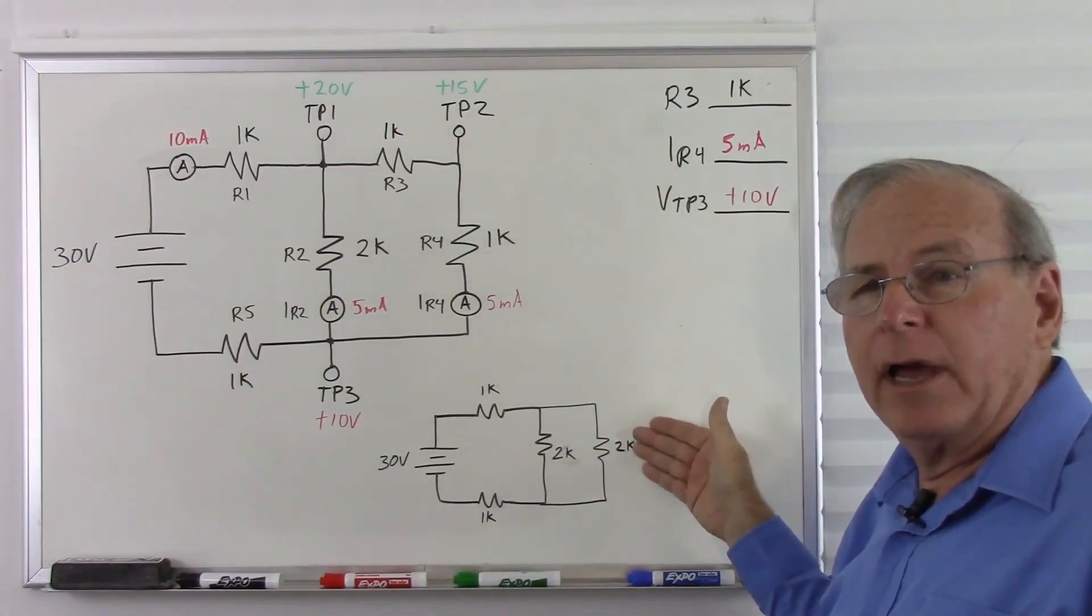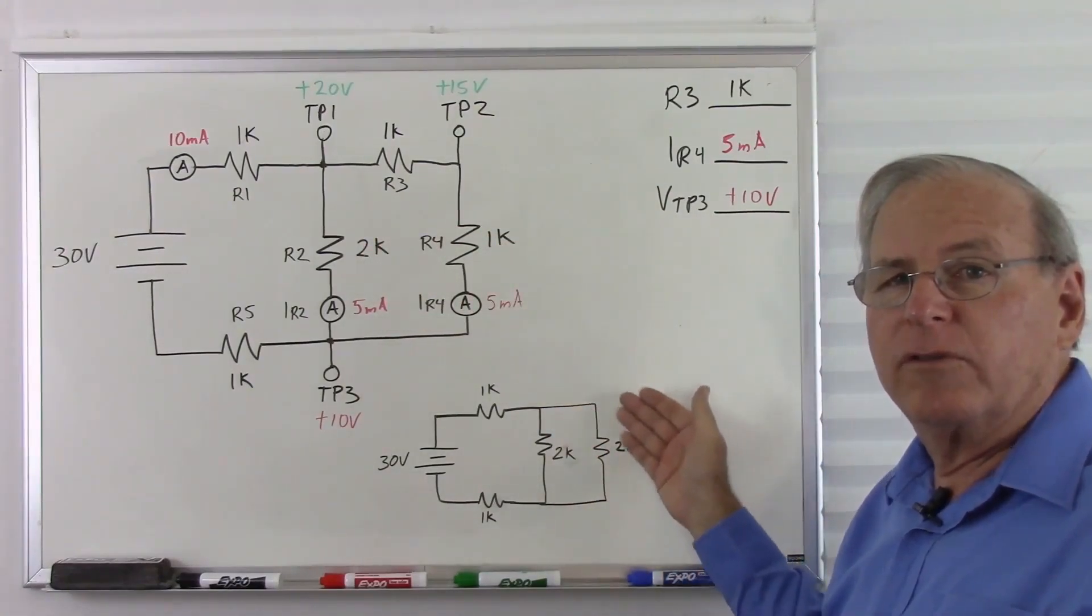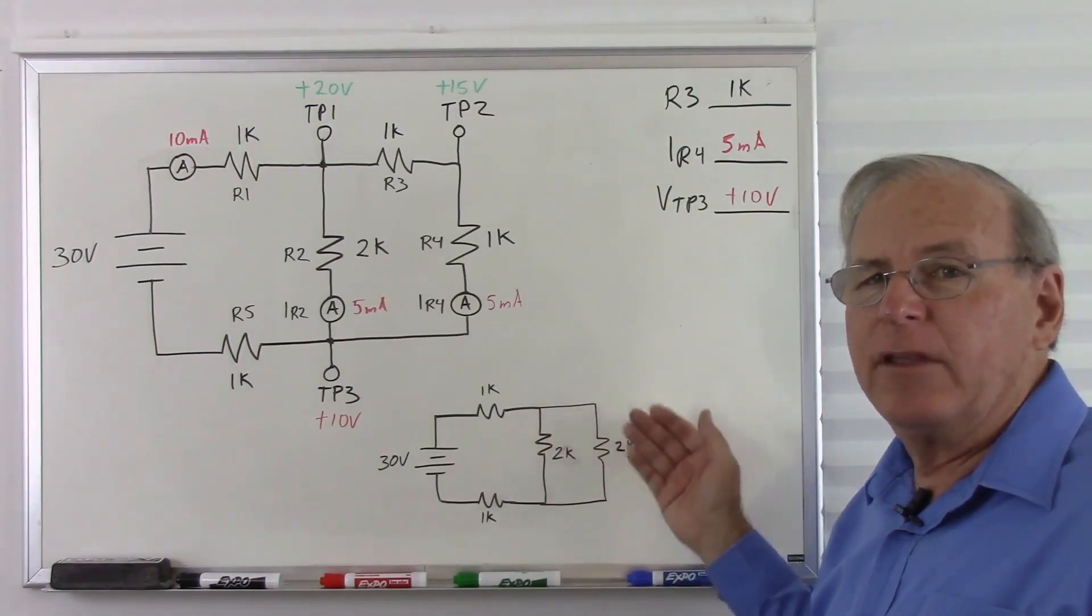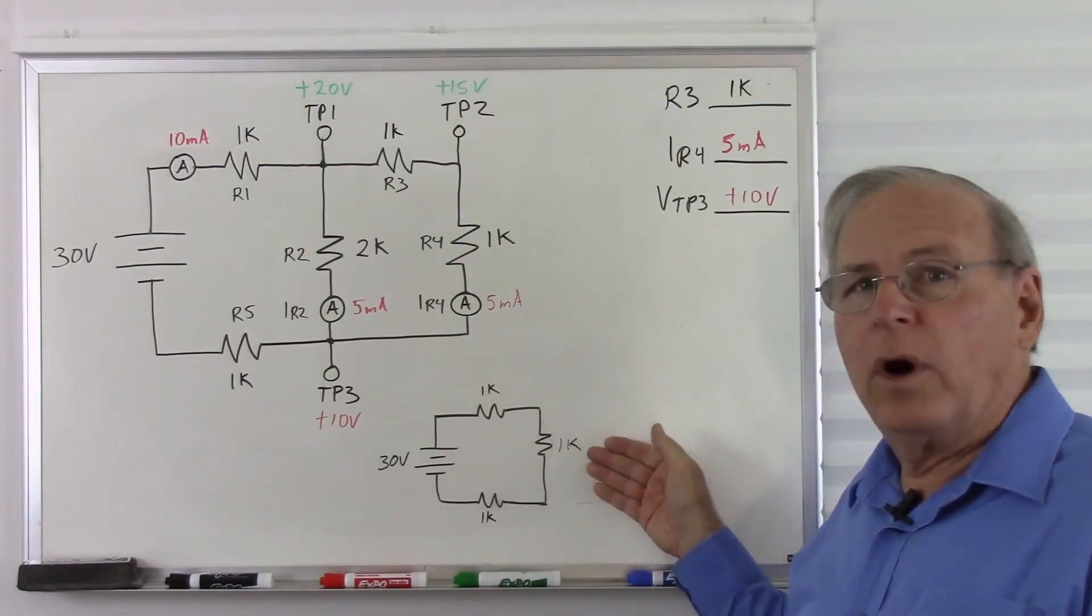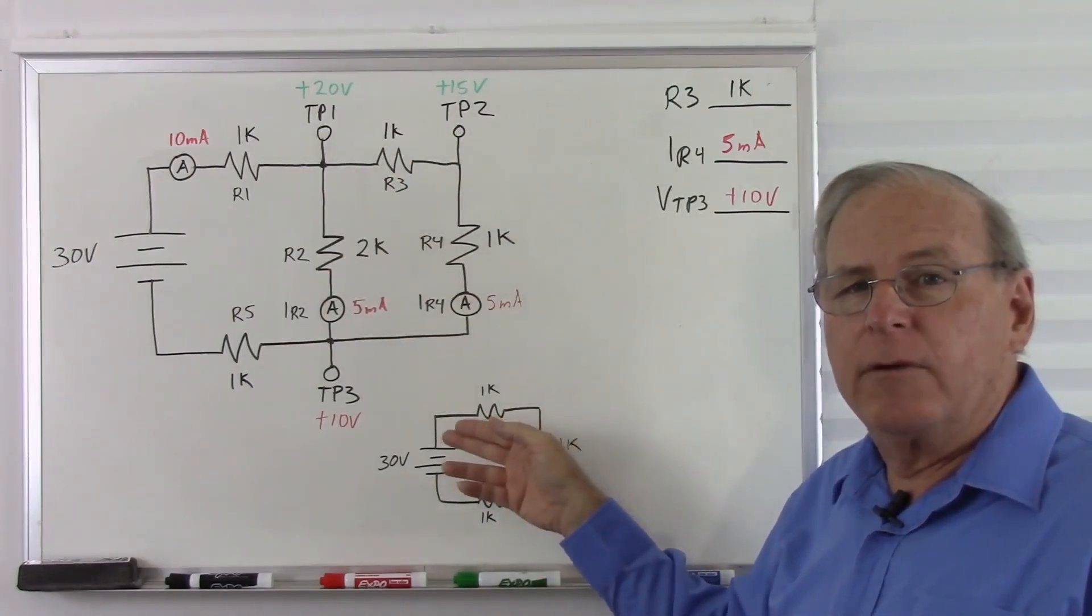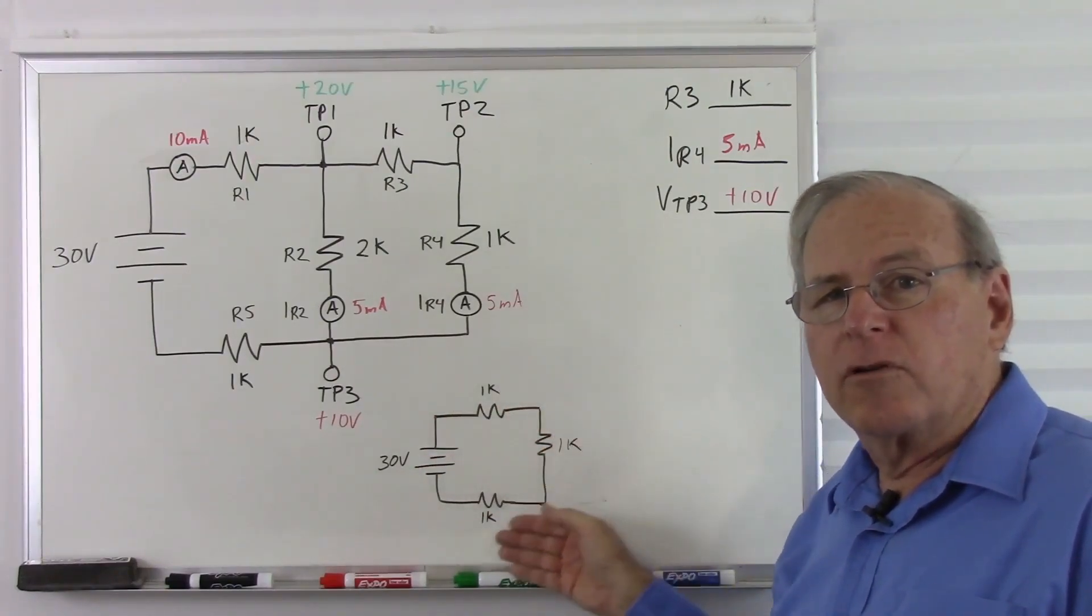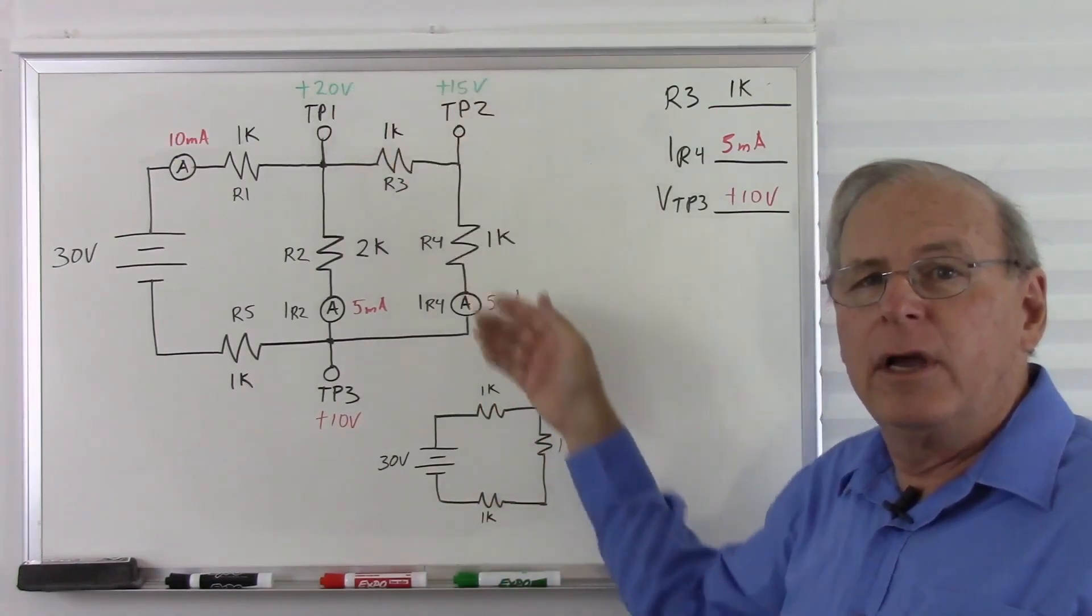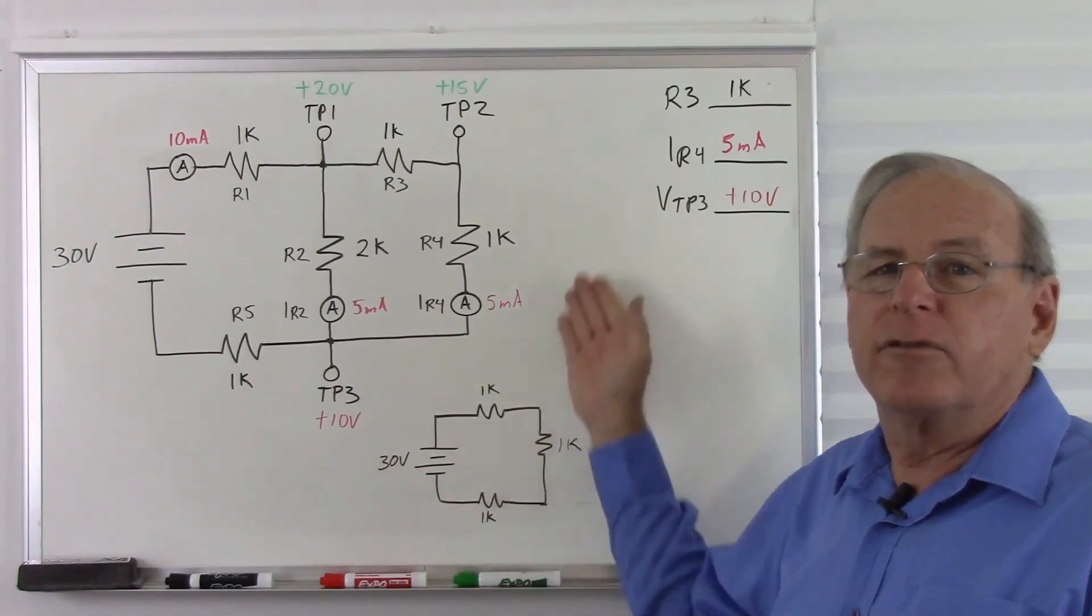This 2k is in parallel with this 2k. So 2k in parallel with 2k. What's the total resistance there? Two of the same value resistors in parallel have half the resistance of either one. So these two become, together, a single 1k resistor. So this circuit acts like three 1k resistors in series. And if they're equal resistance, they should lose equal voltage. So we start with 30. We're going to lose 10 volts across each one. So we start with 30. We lose 10 down to 20. That matches here. We lose another 10 down to 10. That matches here. And then finally down to 0 volts. So everything matches up.